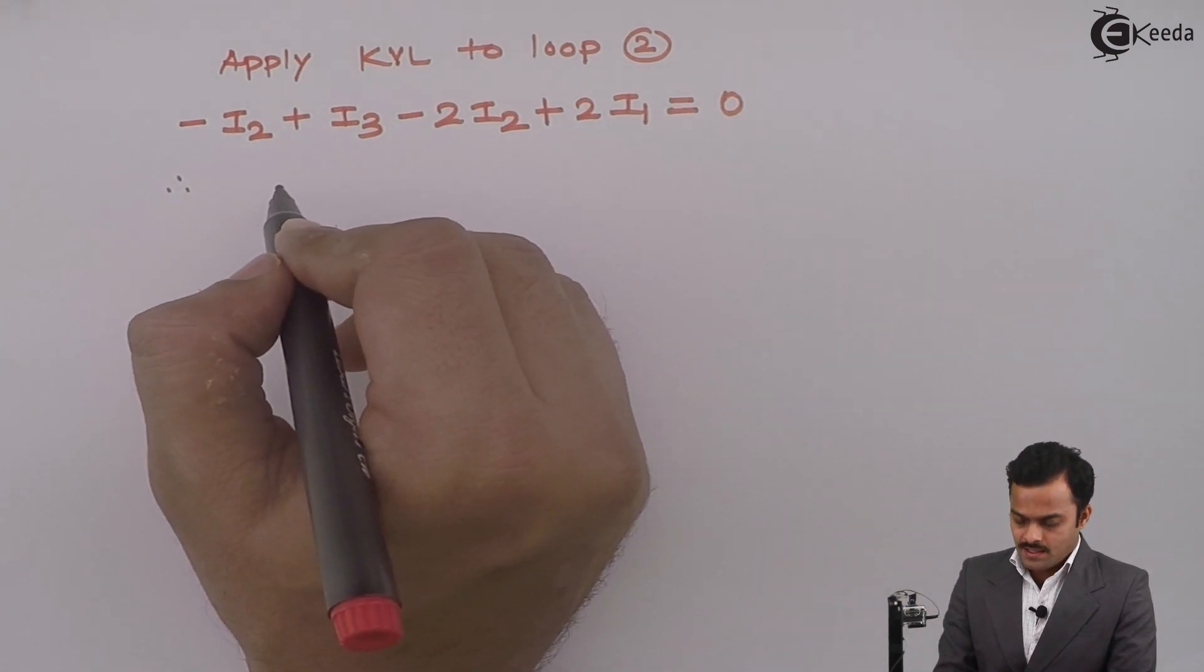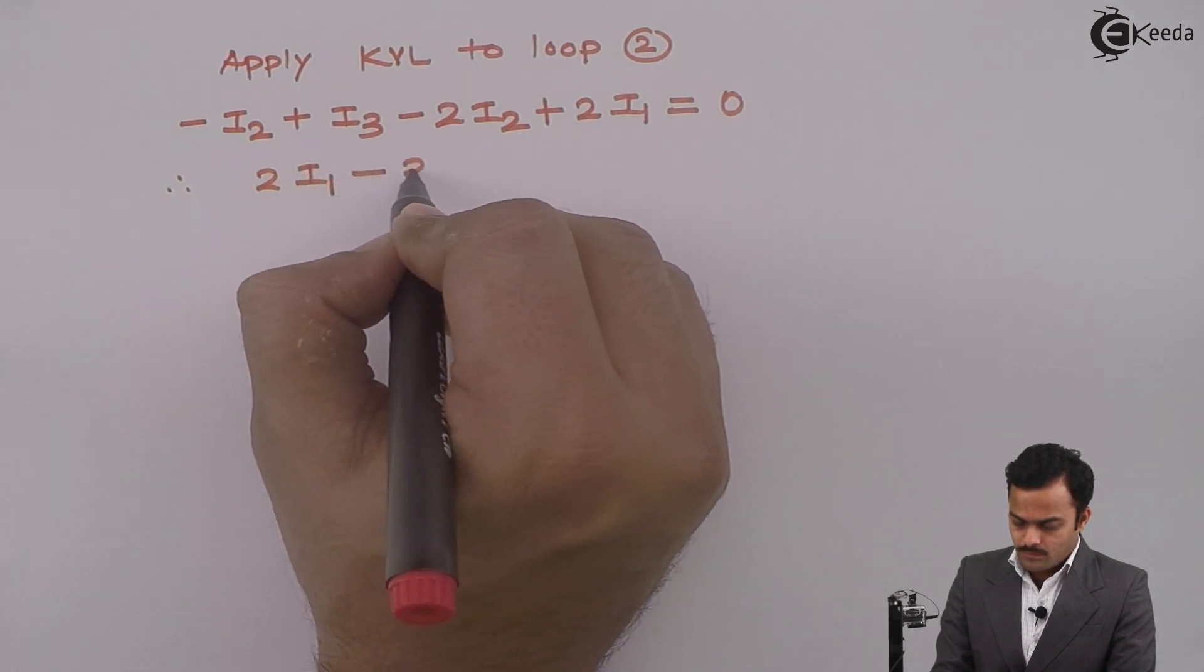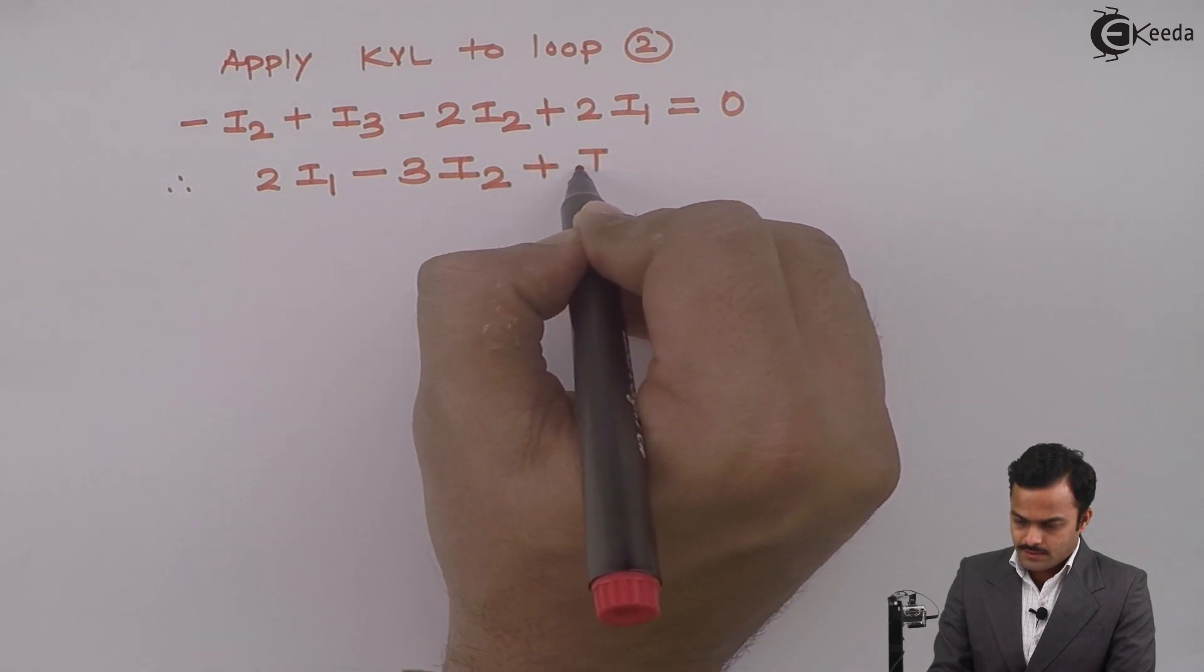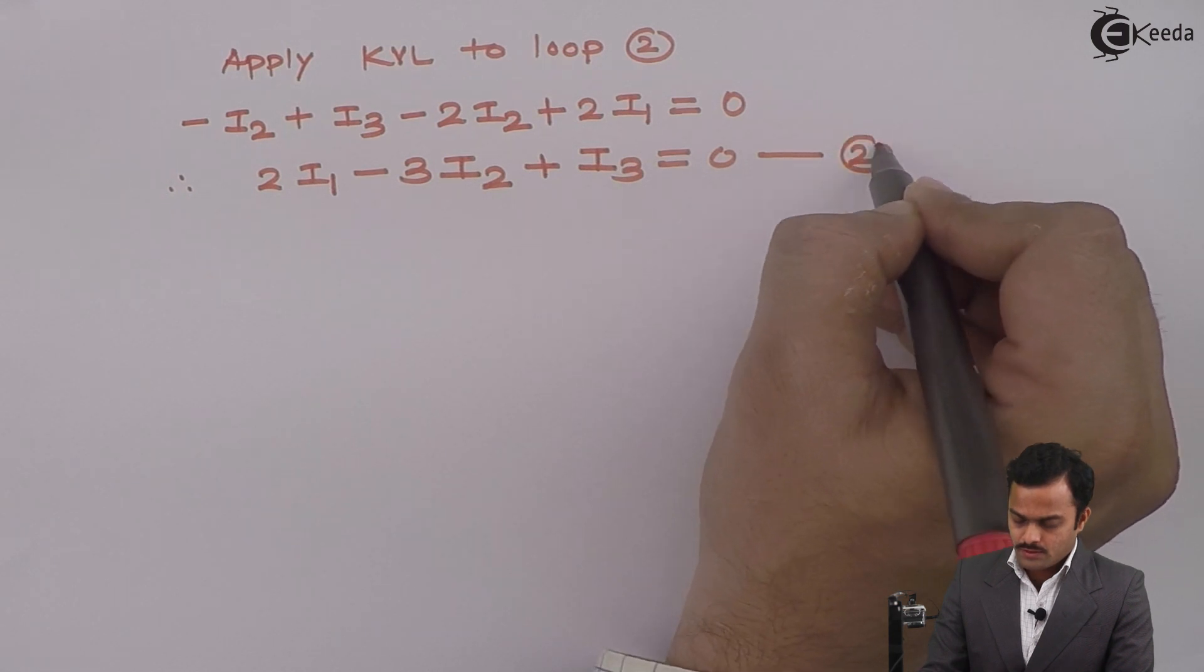So if I simplify, I will get 2I1 minus 3I2 plus I3 equals 0. This is equation number 2.